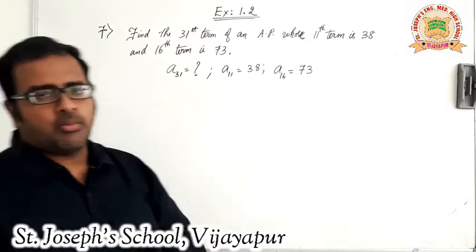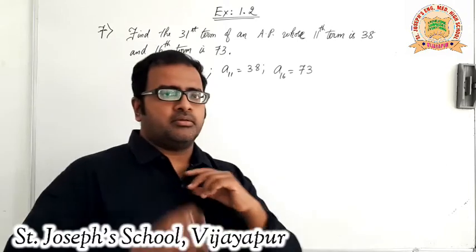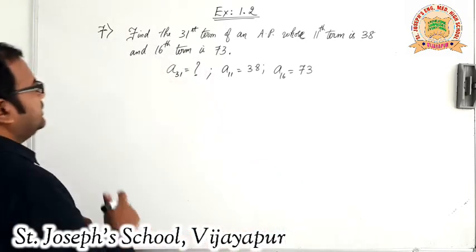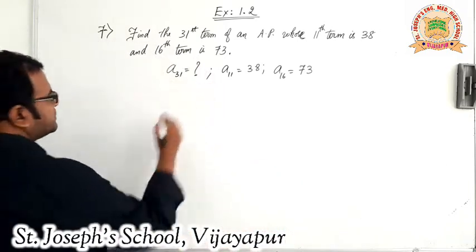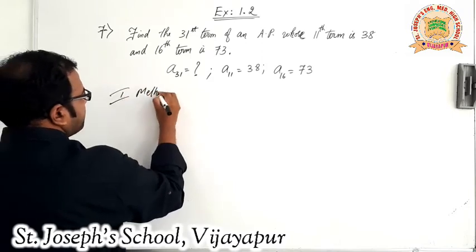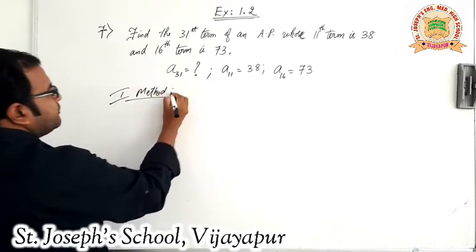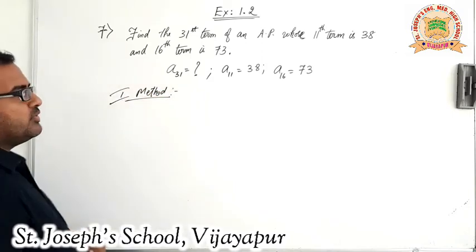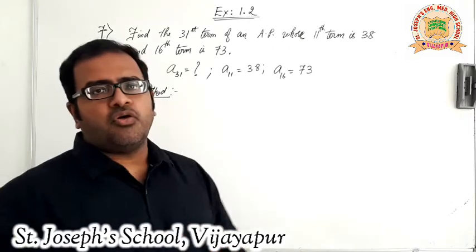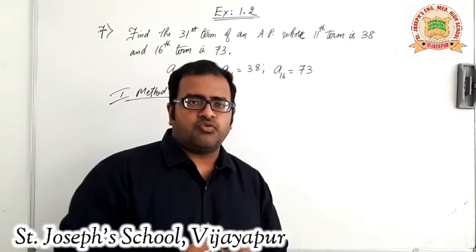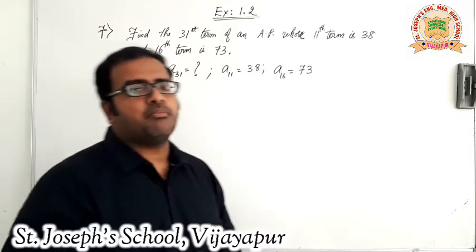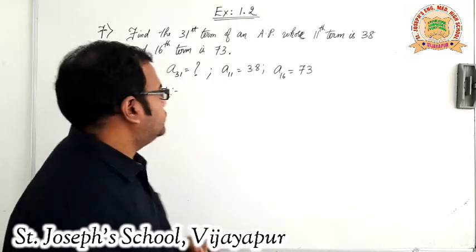There are two methods to go about it. I will be telling you the first method and the second method both. In the first method, we use a special formula for D — for finding the common difference — that is AP minus AQ upon P minus Q.